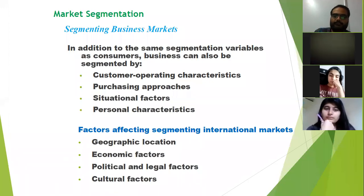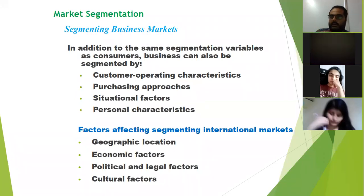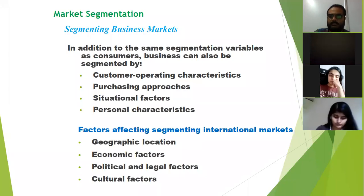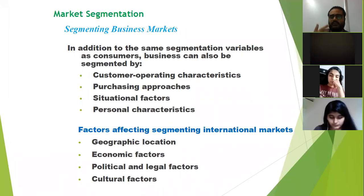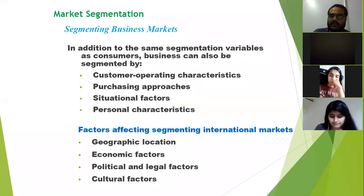When we move forward, we also have to look at how to segment an international market, because it's possible that your company has a multinational operation. Pepsi, Coca-Cola — all these are multinational companies with operations in more than one country. Any company that has operations in more than one country is a multinational corporation. Tata is a multinational corporation with a presence in over 60 countries all over the world.